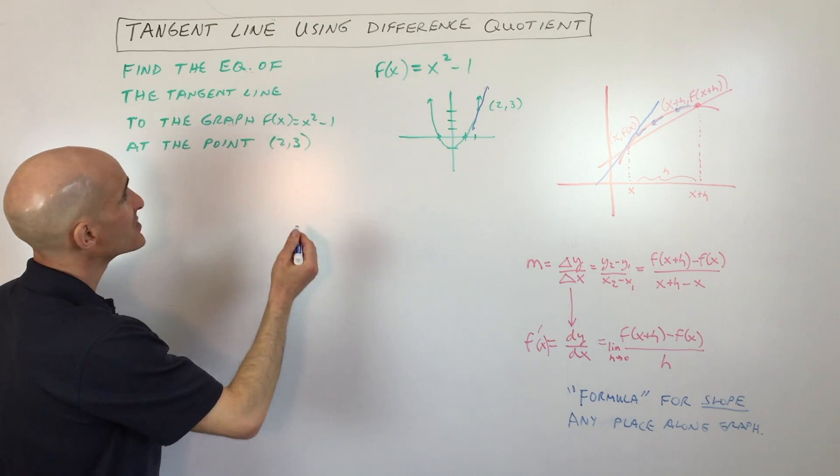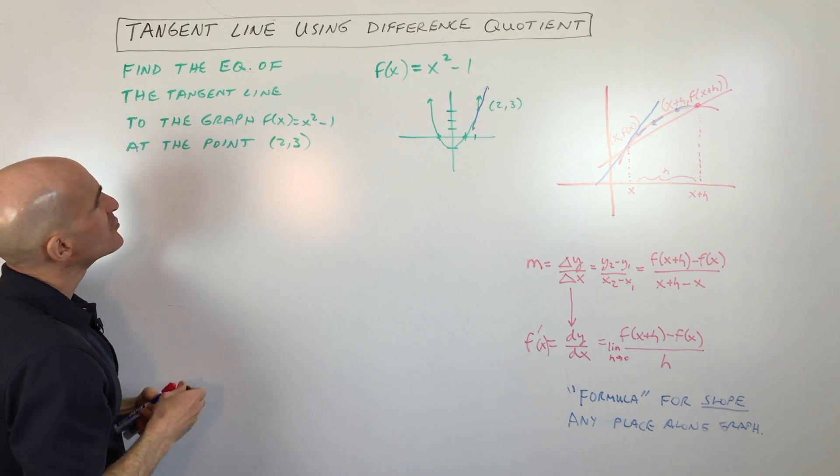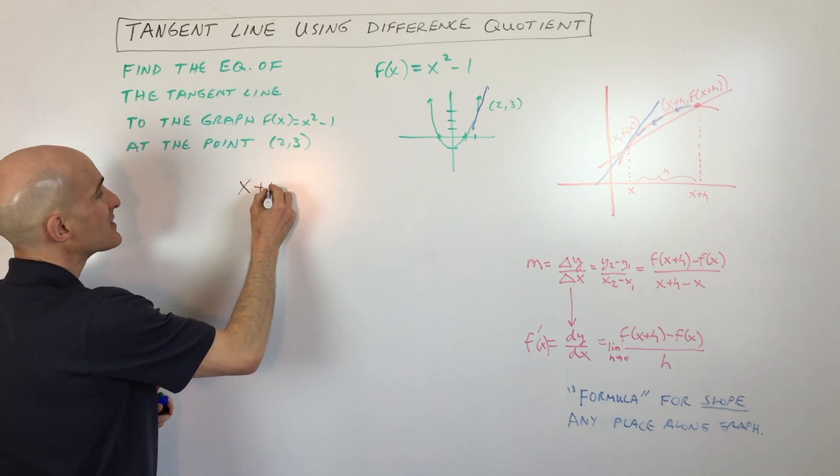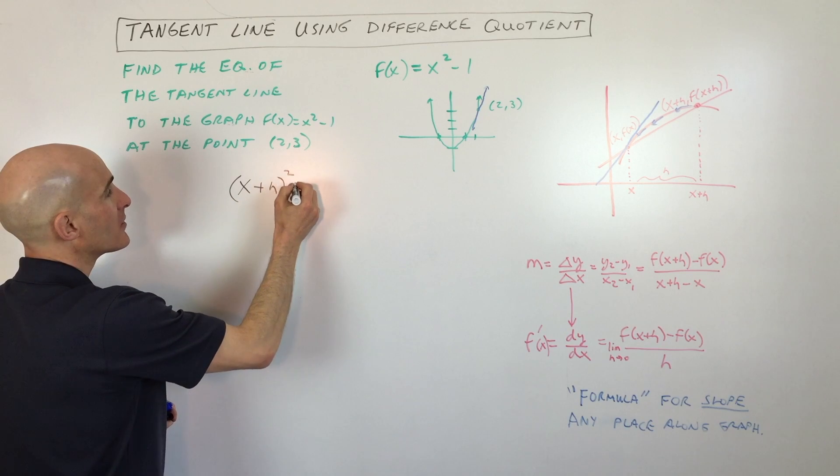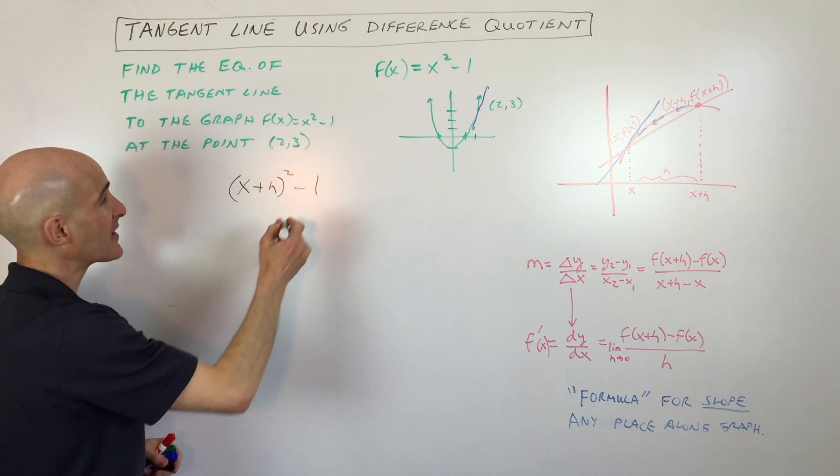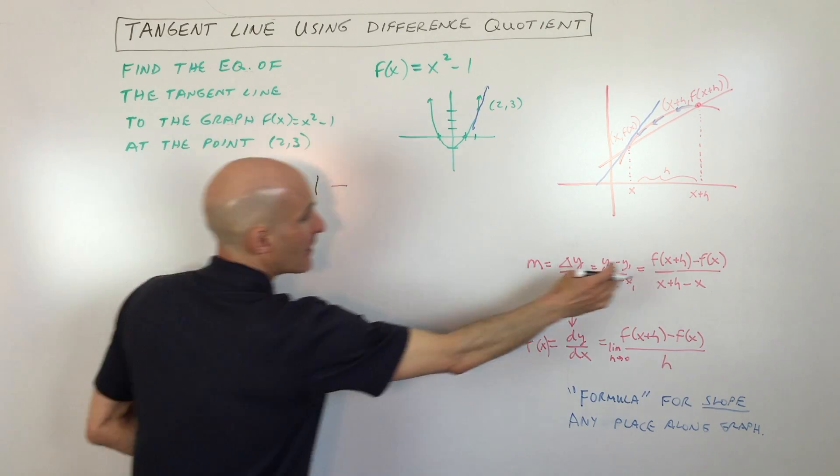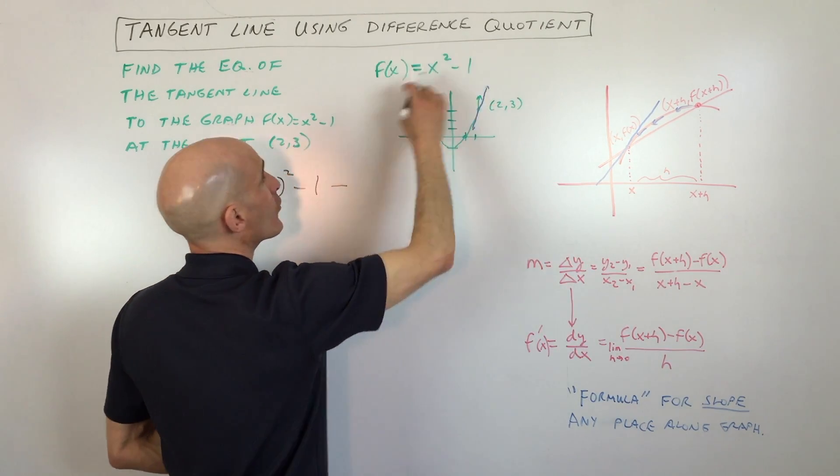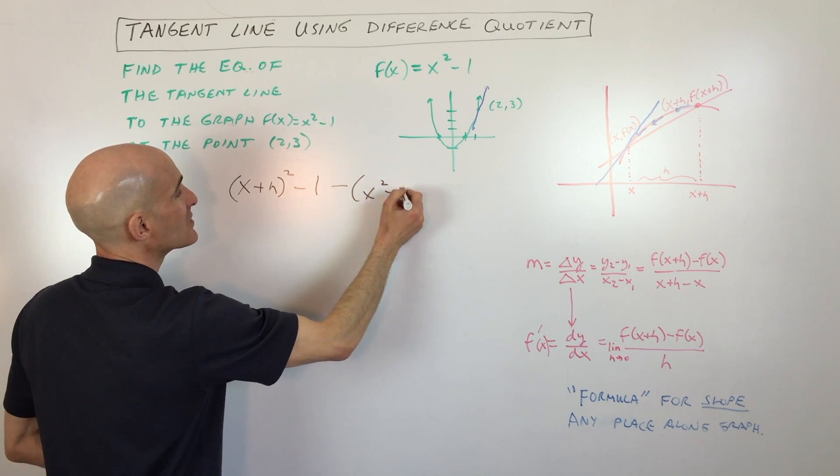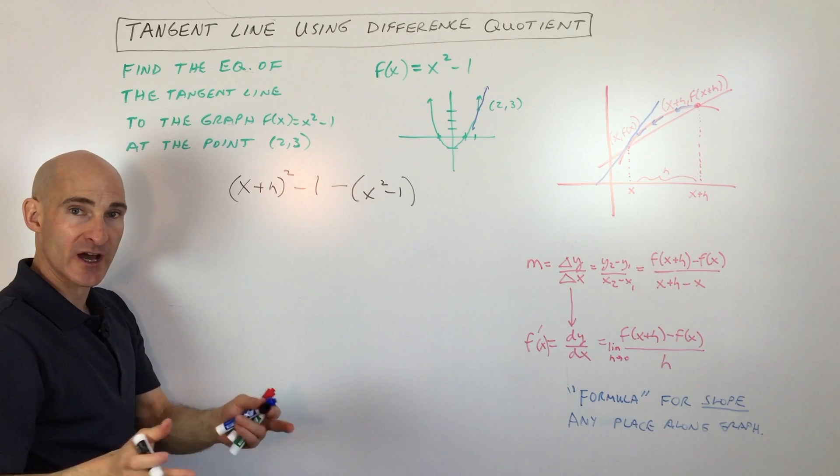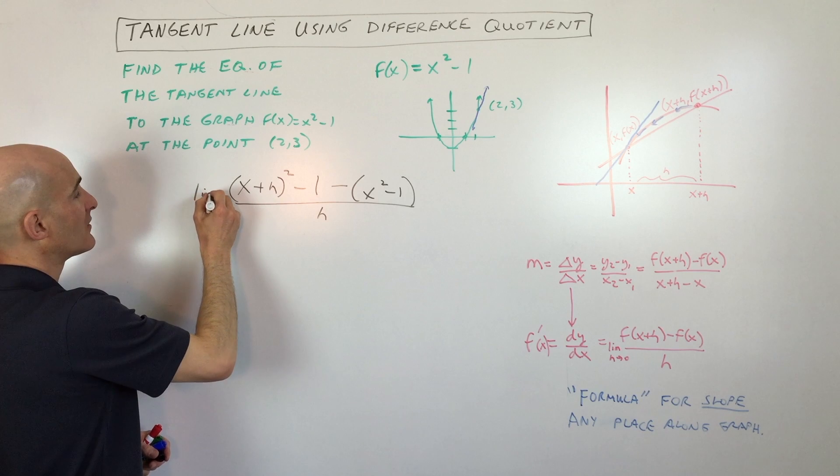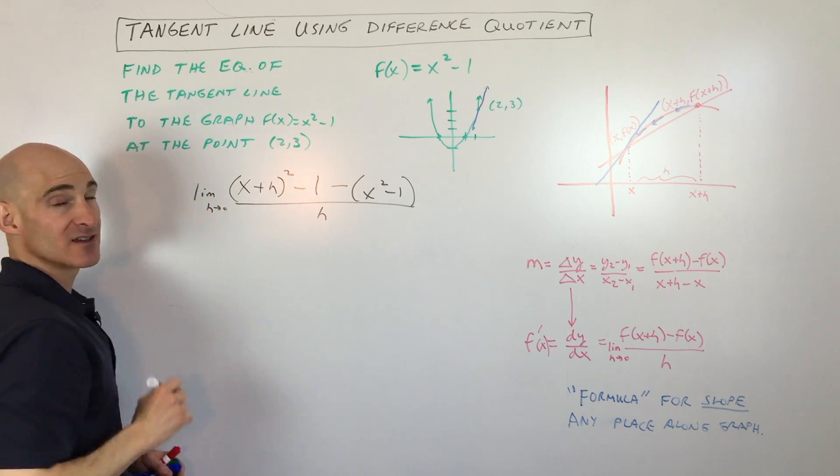So let's get into the difference quotient right here applied to this equation. So we'll do (x + h)² - 1. So all I did was I put x + h into our function in place of x minus f(x), which is the original function. So minus (x² - 1). I put it in parentheses, you want to treat it as a group, all divided by h. And we're looking at the limit as h approaches zero.